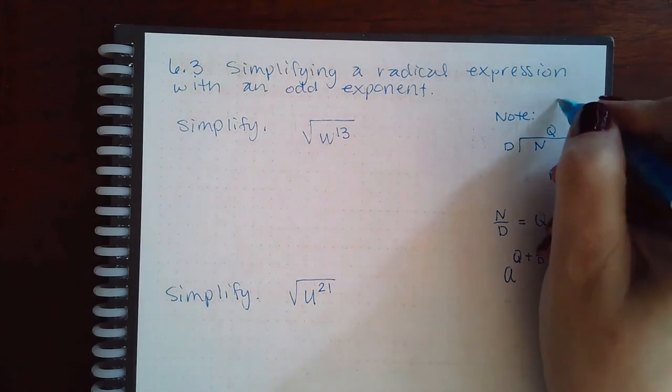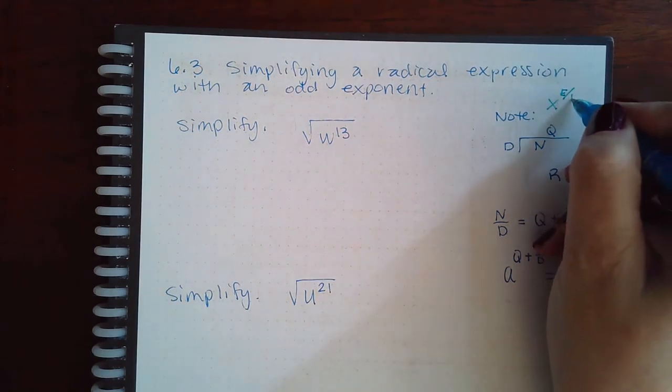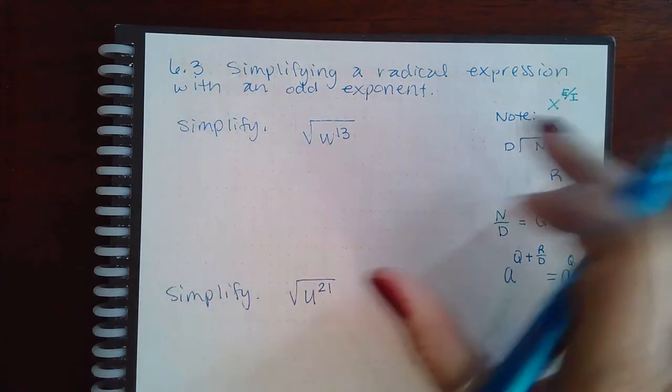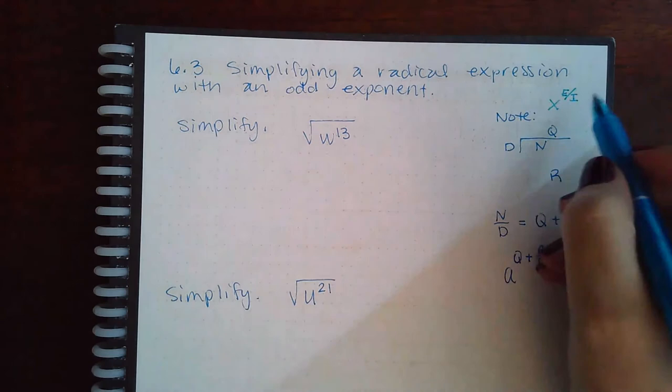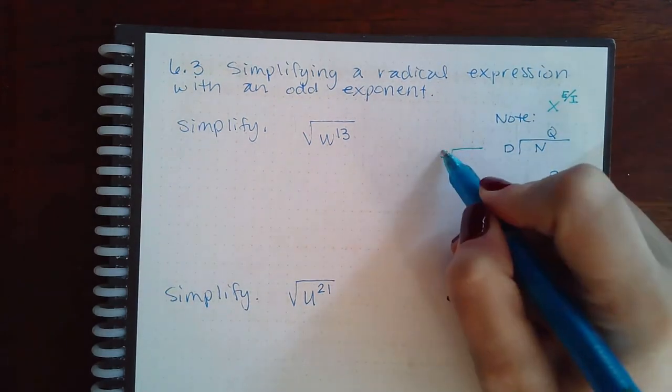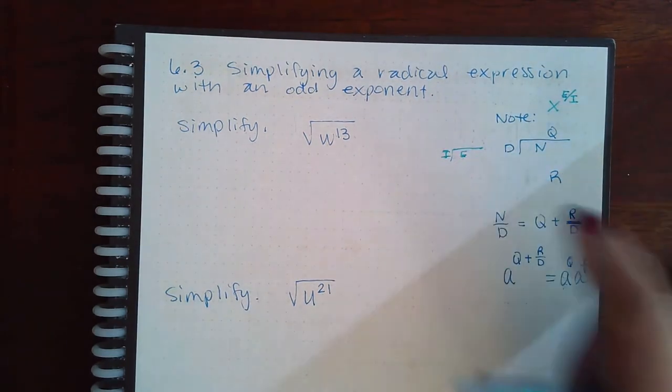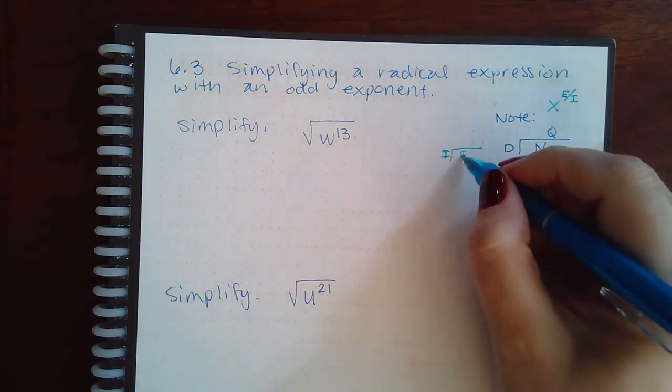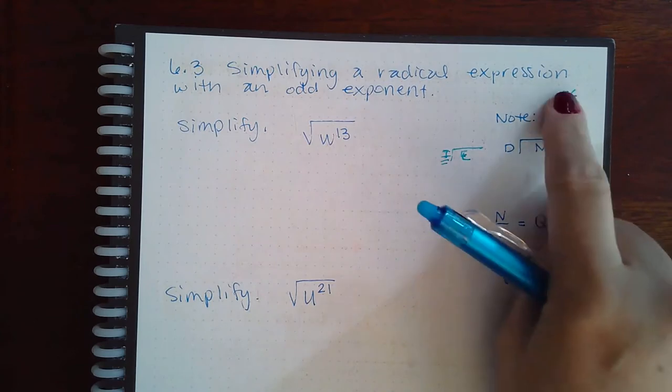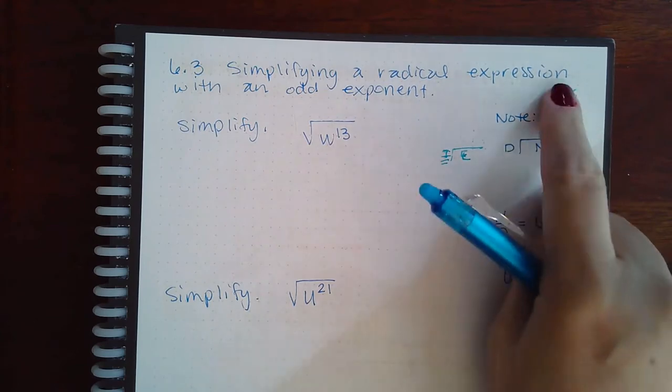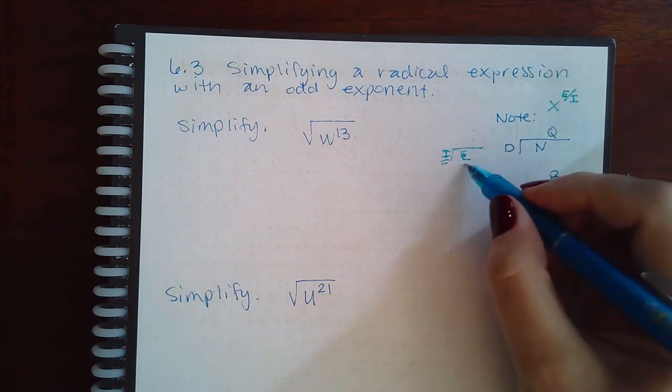You're going to be taking the exponent here and dividing it by the index that you have. You set it up as I divided into E, so you have your divisor which is I, and then the numerator is E.